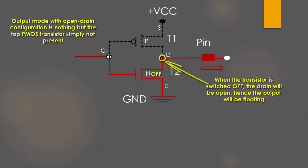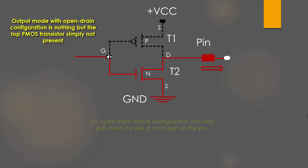That's the reason it is called open drain. So as a result, open drain output configuration can only pull down the pin but it lacks pulling up capability. That means it has two states: either ground or float, which is absolutely useless.